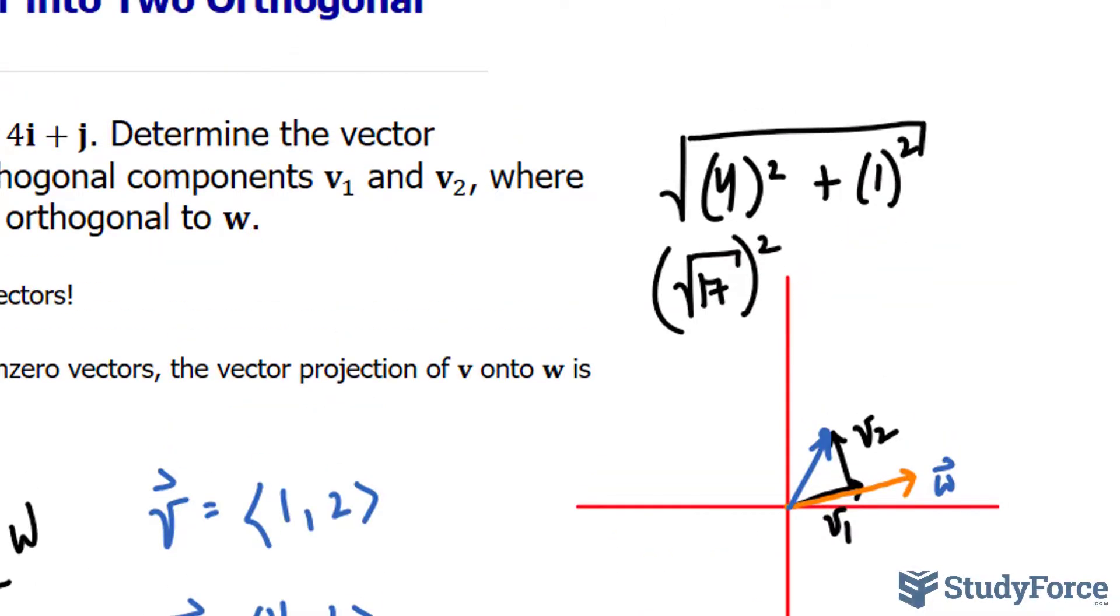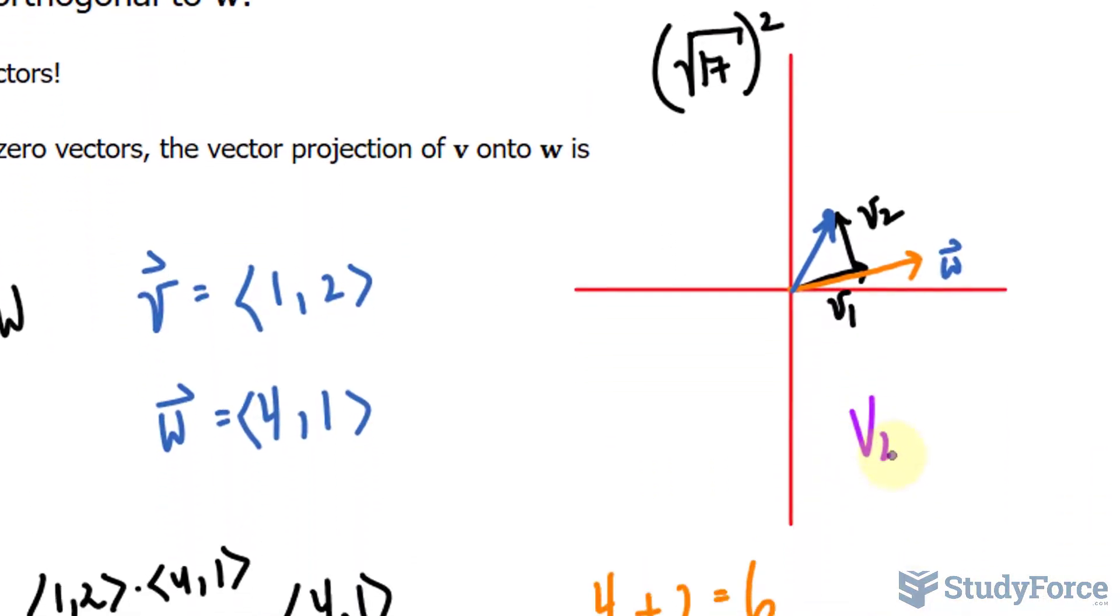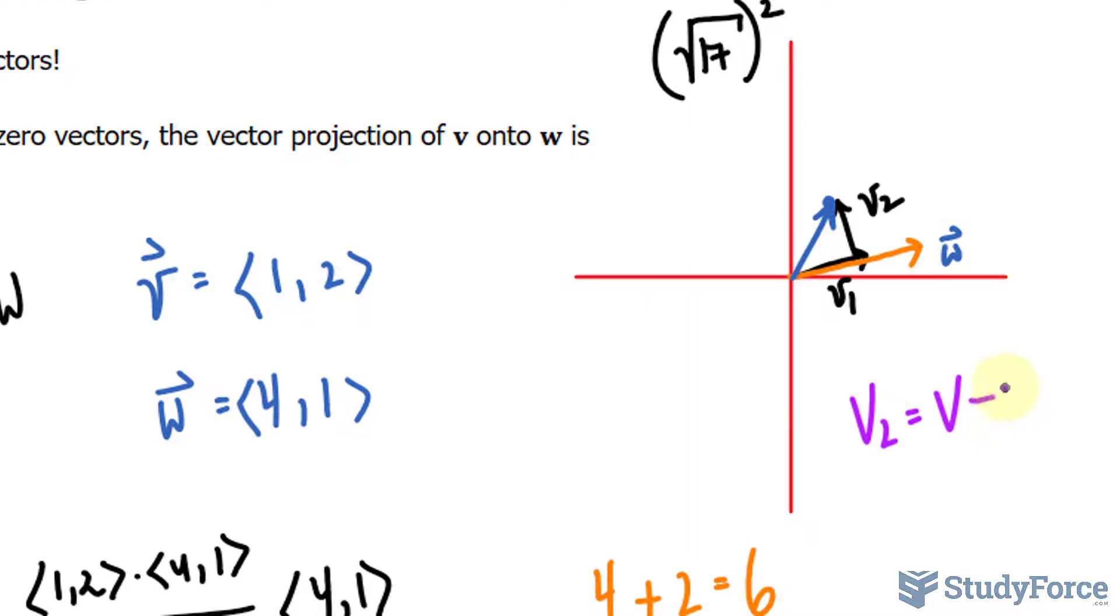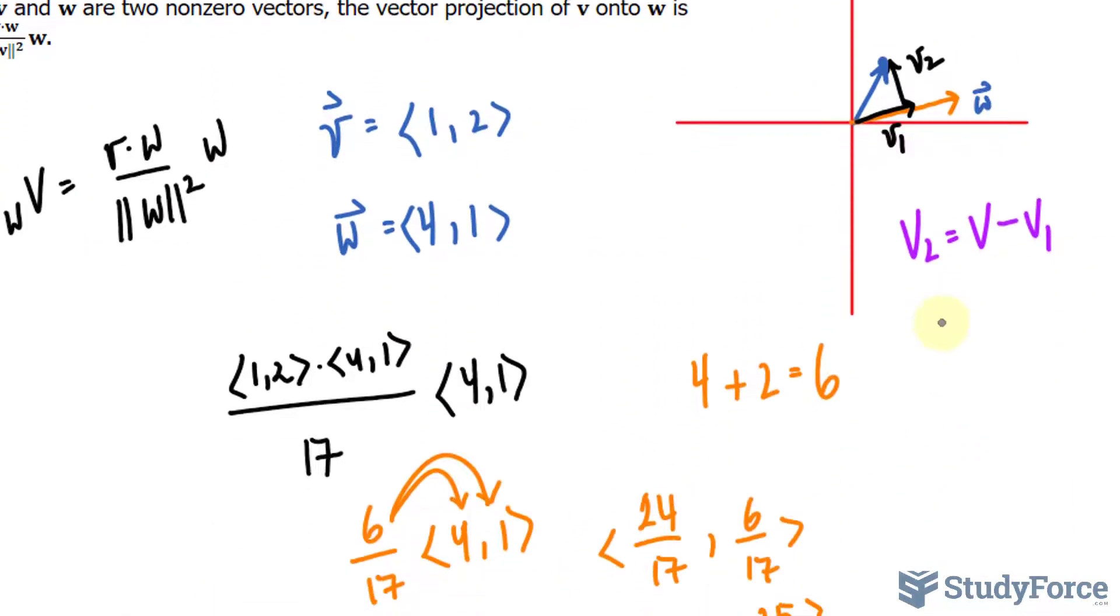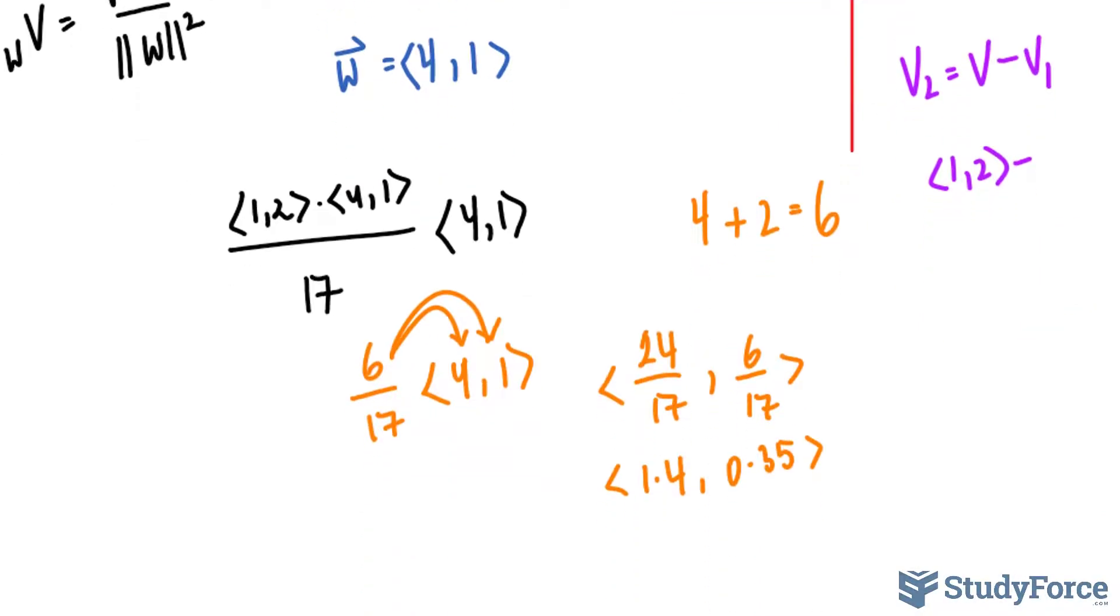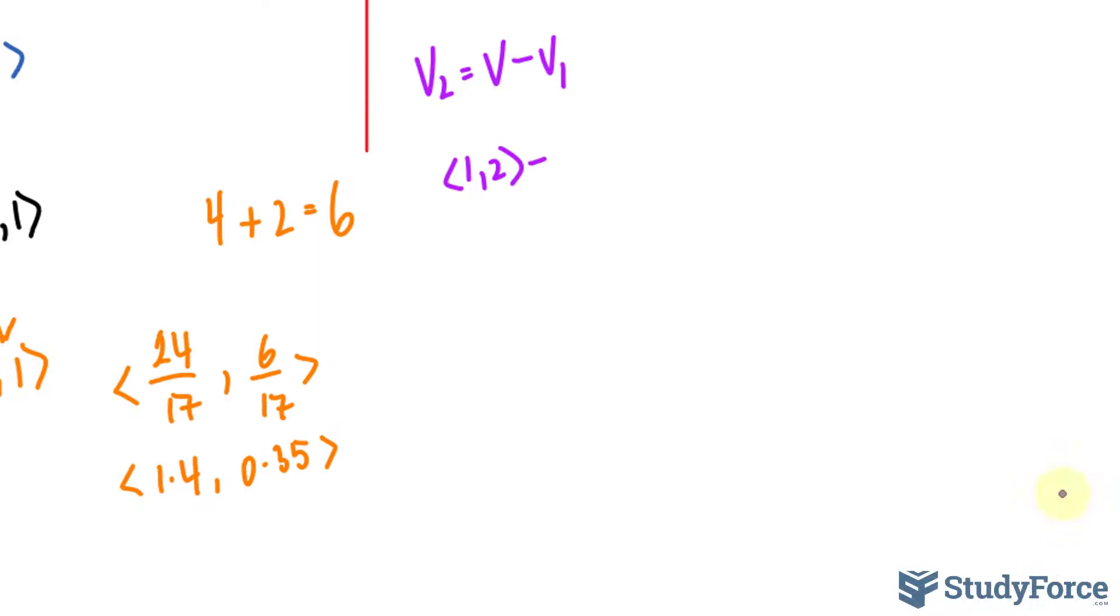Now, to find V₂, we use the relationship V₂ is equal to V minus V₁. So the components of V were ⟨1, 2⟩, and the components of V₁, which we just found,